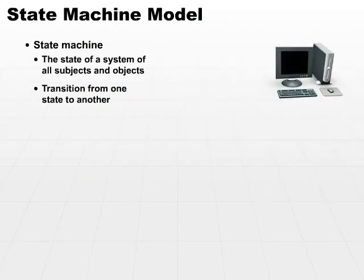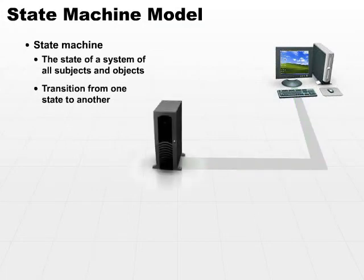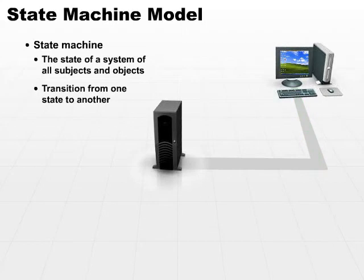For example, we have a subject who is requesting access and an object which has not been accessed. The next state of the machine would be the state in which the subject has successfully accessed the object. How do we get from requesting access to an object to actually accessing that object? That's a transition from one secure state to another secure state. Since the state machine model maps that and very strictly defines how we get from one state to another, the transition can be controlled, and we can formally design the controls to move from one state to another.